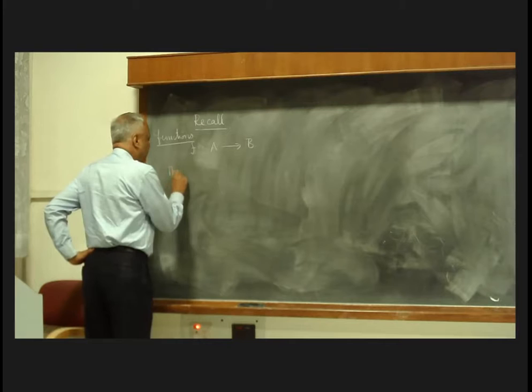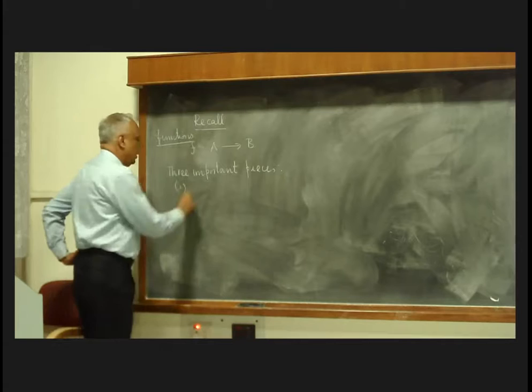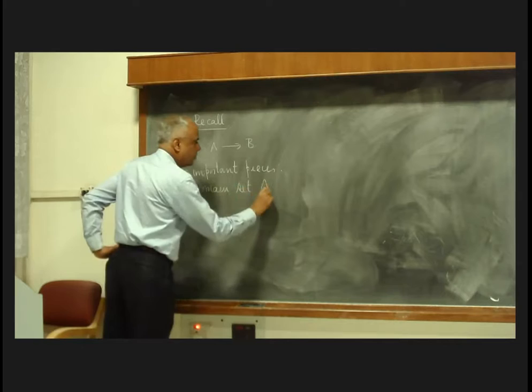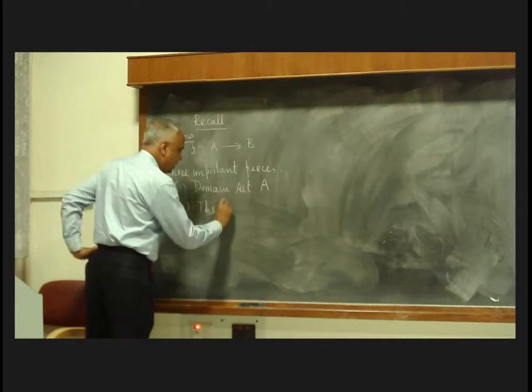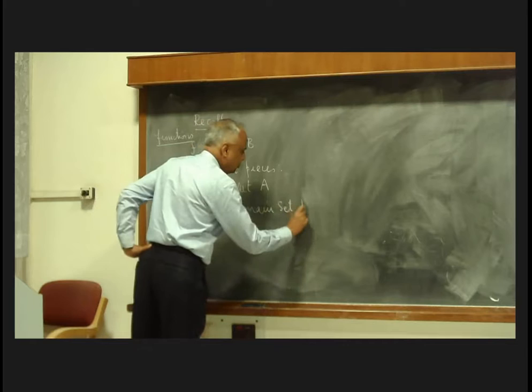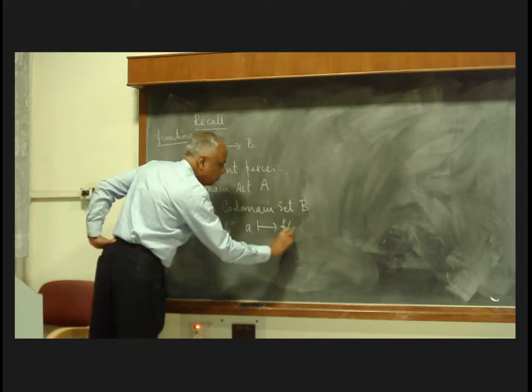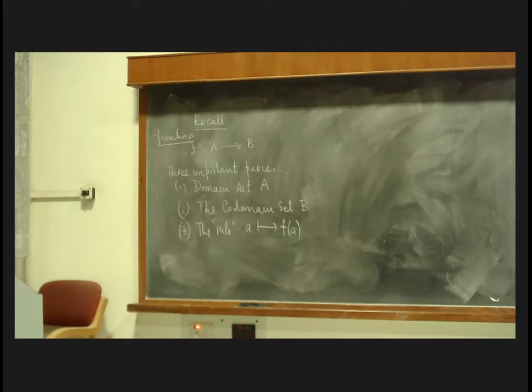A function is made up of three important pieces. One: the domain set A. Two: the codomain set, that is the value set, where the values are. And third: the rule of association which takes A to F of A. Basically, therefore, there are three pieces — three components in this gadget called a function.